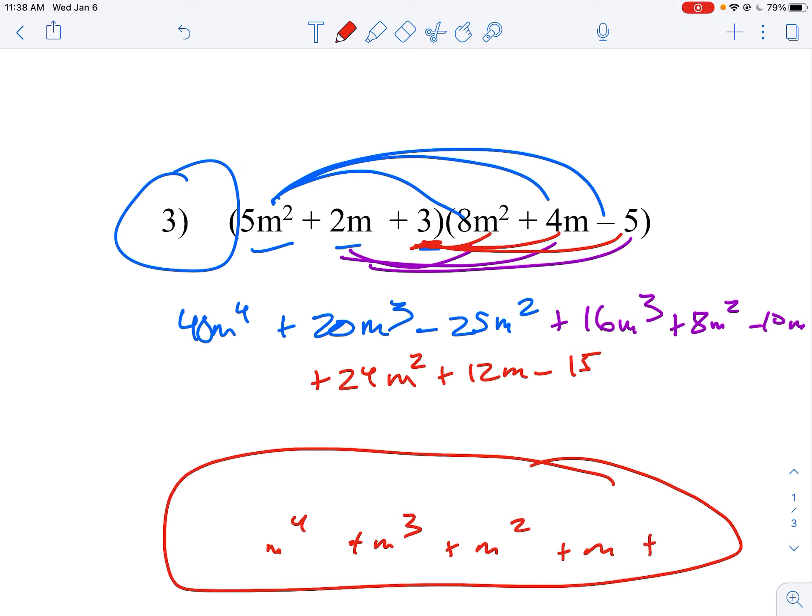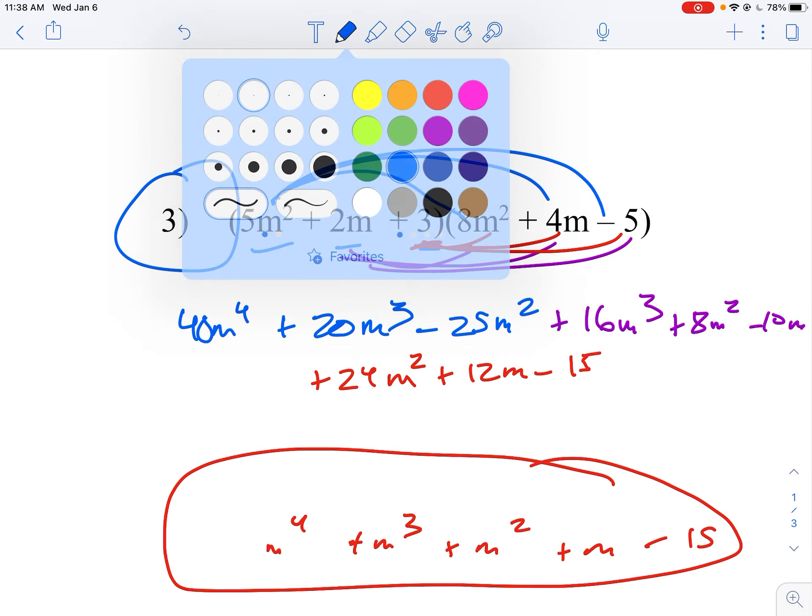And then it will be minus 15 on the end. So that's not the exact answer, but if you combine like terms, you're going to have m⁴, m³, m², m, and then constant term. So hopefully it gives you a head start on things like that.